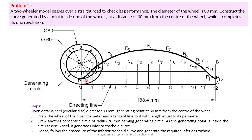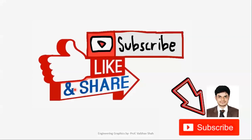After marking all points, join them all with a smooth dark curve — this is your required inferior trochoid. The curve is generated by a point inferior to (inside) the rolling circle, which is why it is called an inferior trochoid. That is all from my side. If you enjoyed the lecture, don't forget to like, share, and subscribe to my channel. Keep learning, stay connected. Bye bye. Thank you.